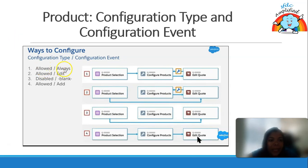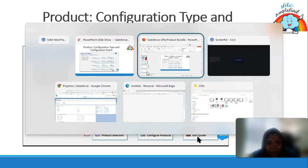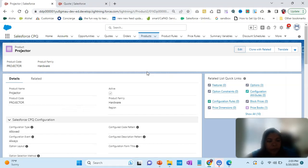The first one is Allowed and Always. In this option, there is a product selection where we select the product, then we have Configure Product where we can configure the product — this screen comes — and then we can edit code. After configuring the product we can edit code, and if we want to reconfigure we can come back.